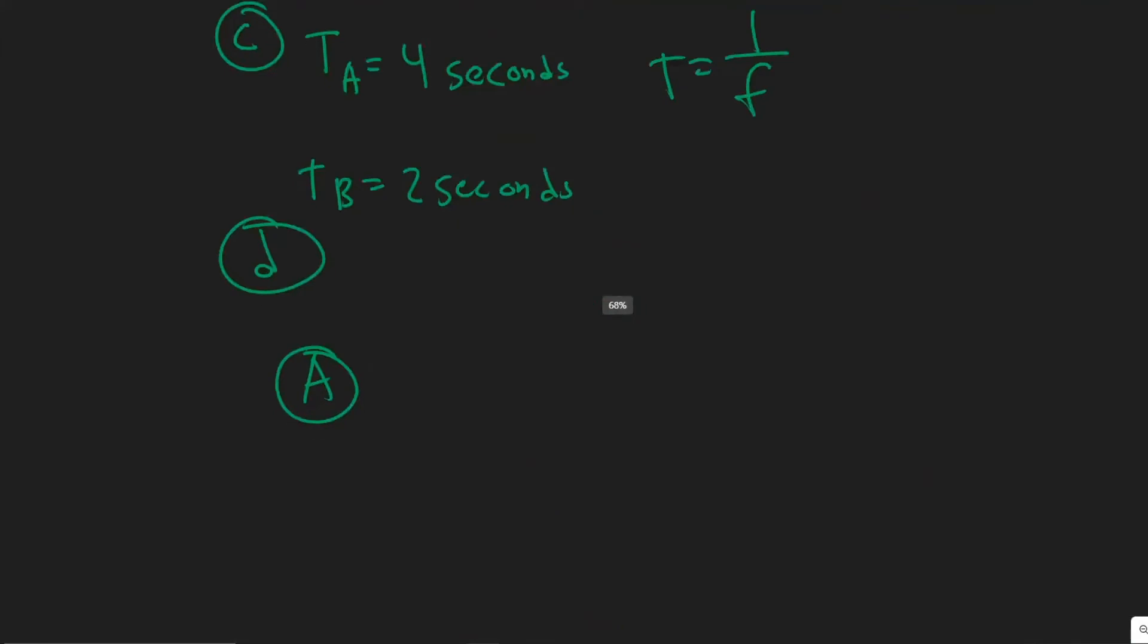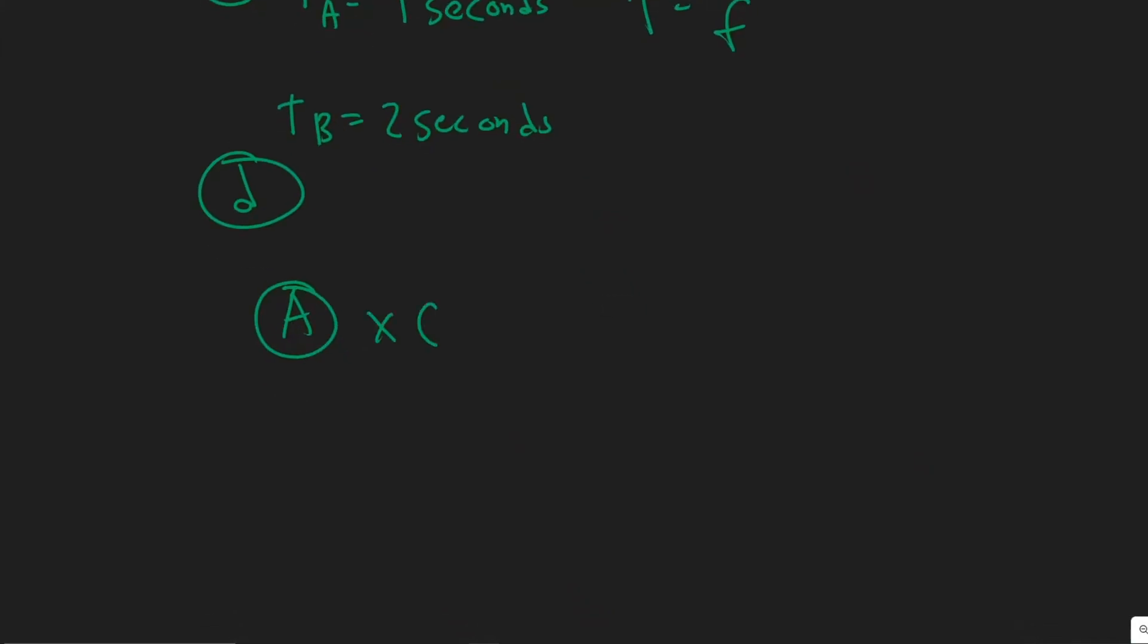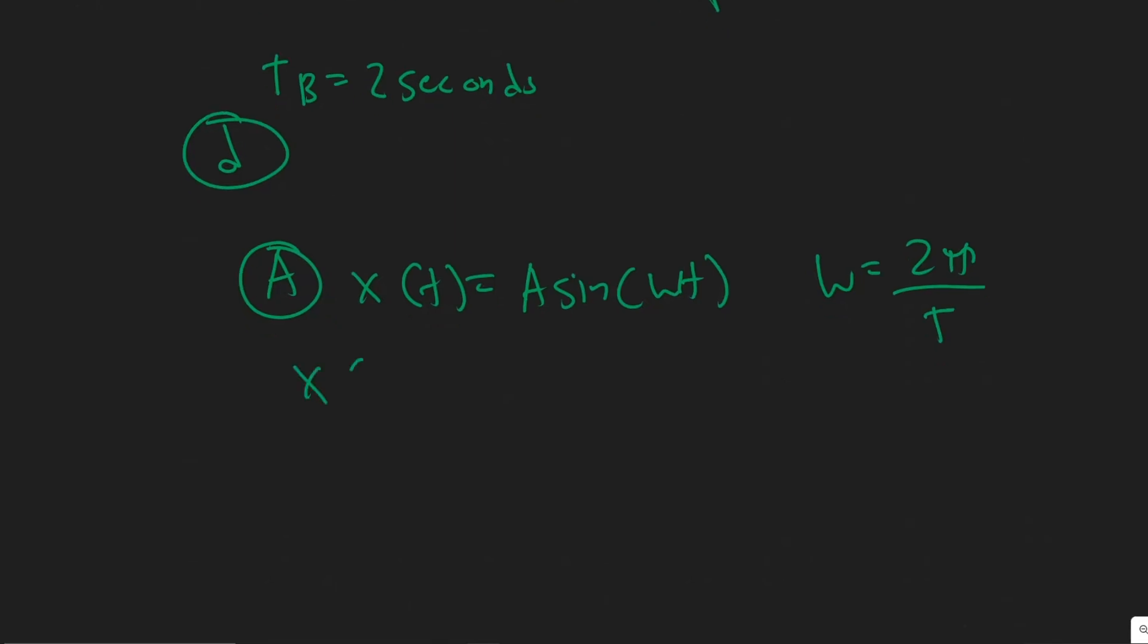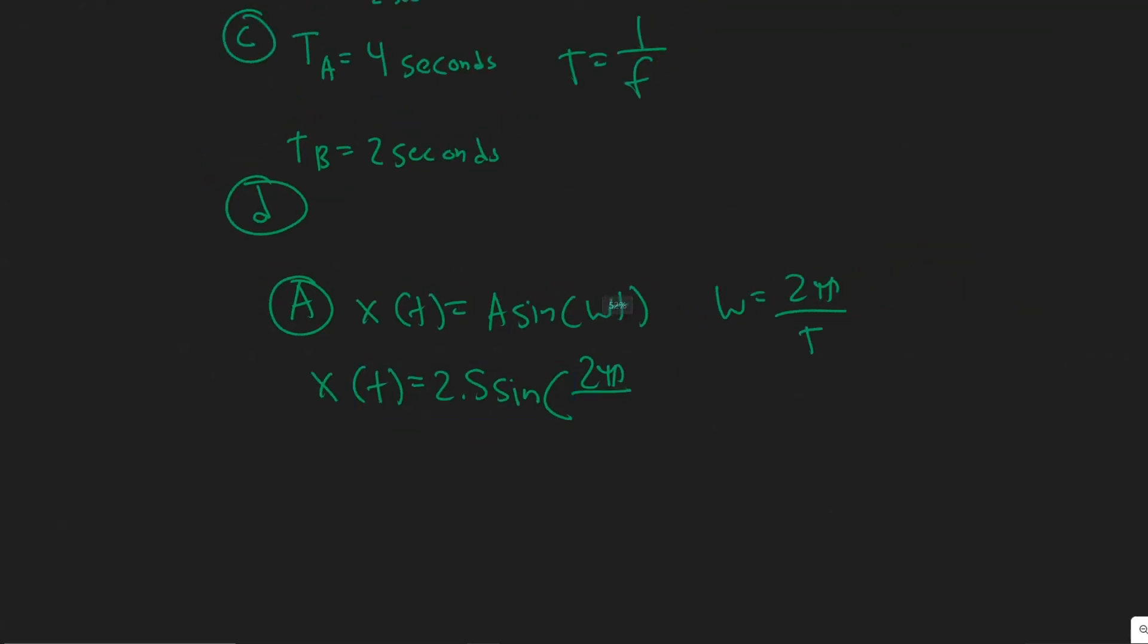So the formula you use is X(t) equals A sine omega t. So omega is essentially equal to 2π divided by the period. Okay. So if we were to plug all the values in, the amplitude for A was 2.5 meters times the sine of omega, right, which was 2π over the period. And then we know the period, right, for A, is equal to four seconds.